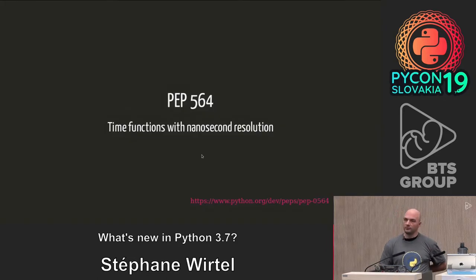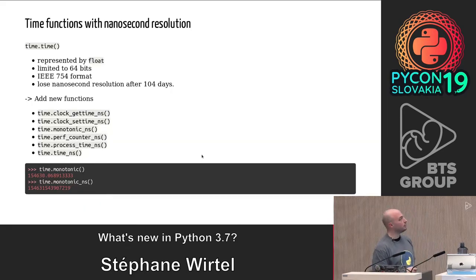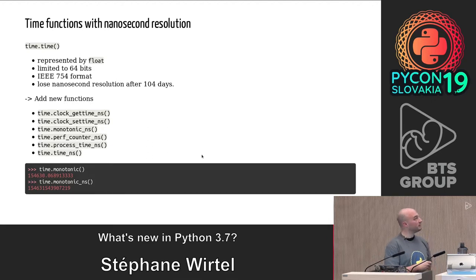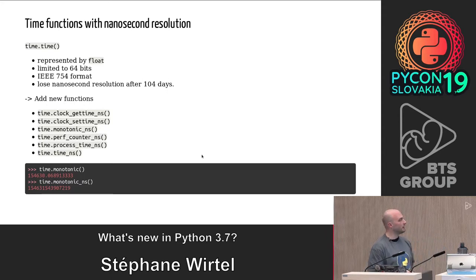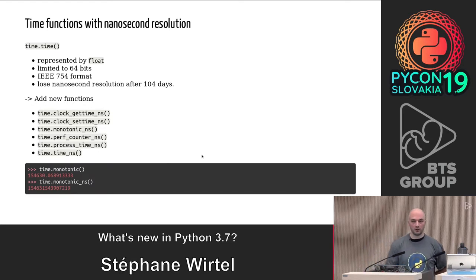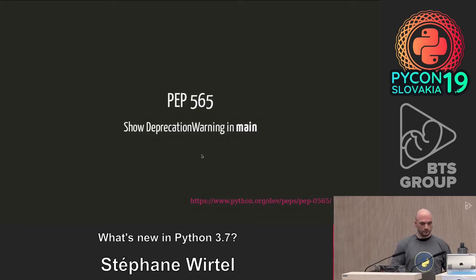By default, the time function returns a float limited by the 64-bit float representation. When we want nanosecond resolution, there is a limitation over 104 days where we lose nanosecond precision. For that, a few new functions have been implemented: clock_gettime_ns, monotonic_ns, and time_ns. The difference is that the old functions return a float; the new ones return an integer. If you want nanosecond resolution for benchmarks or other projects, my advice is to use the nanosecond resolution functions.